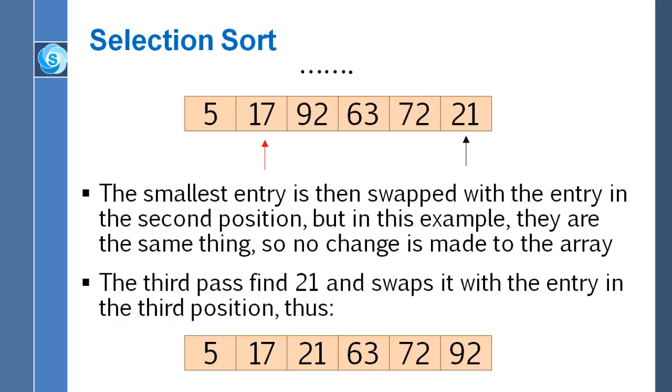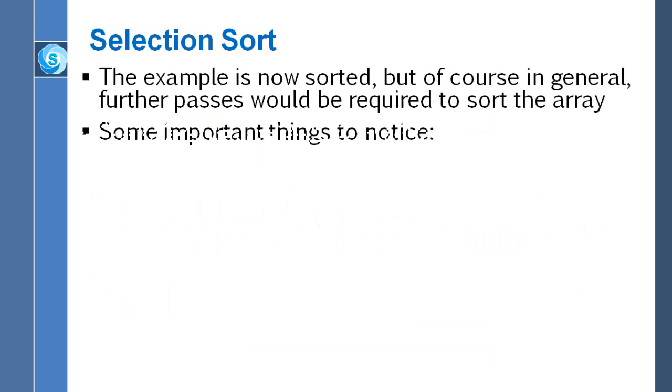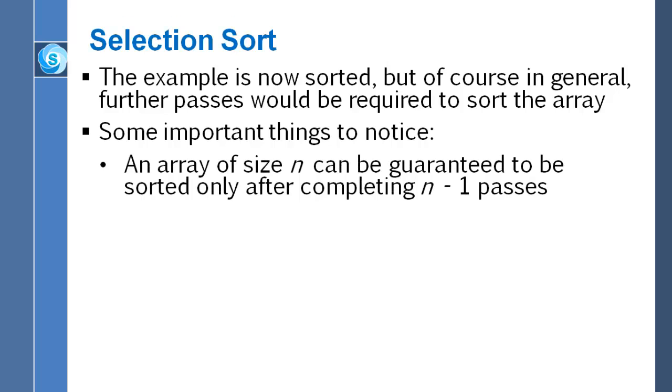In general, more than three passes would be required to sort an array of size six. Perhaps you did this, but things are very similar to what we saw with bubble sort. If we're sorting an array of size n, then in total we're going to need n minus one passes. Or at least, n minus one passes is sufficient to guarantee that any array of size n will be sorted.